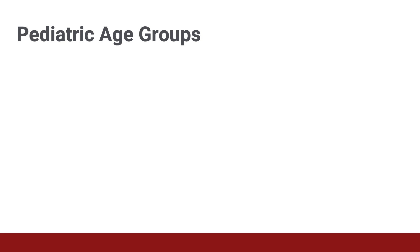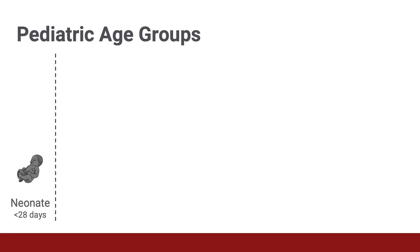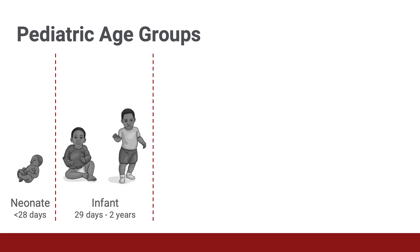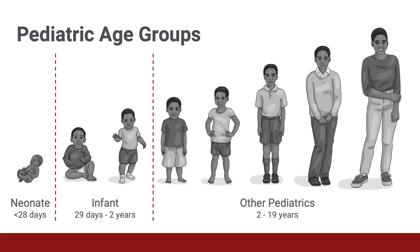Now, unlike adults that are treated the same regardless of age, children have different age groups in which they may be classified. Neonates refer to people less than 28 days of life. Infants are children 29 days to 2 years old, and all other pediatric patients are 2 years to 19 years old.